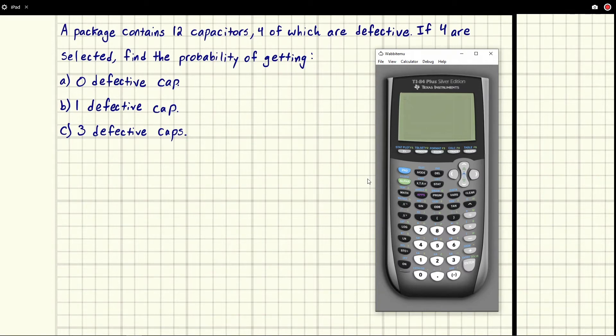Eric Burgess here. A package contains 12 capacitors, four of which are defective. If four are selected, find the probability of getting zero defective capacitors, one defective, and three.